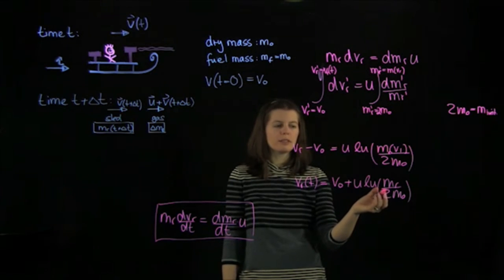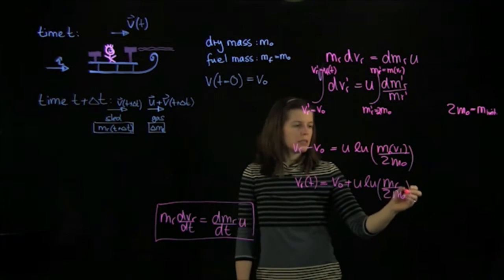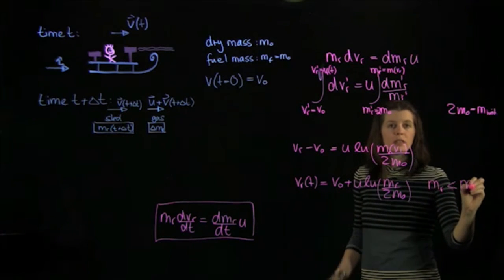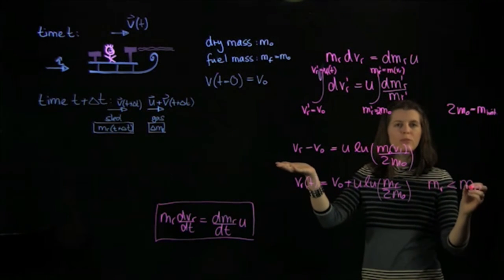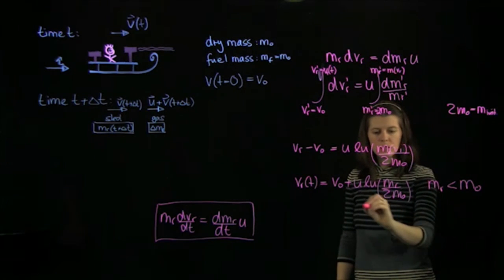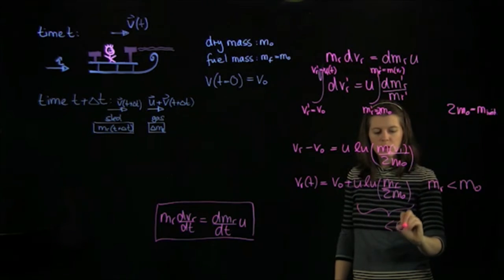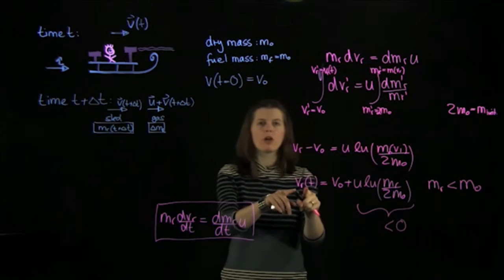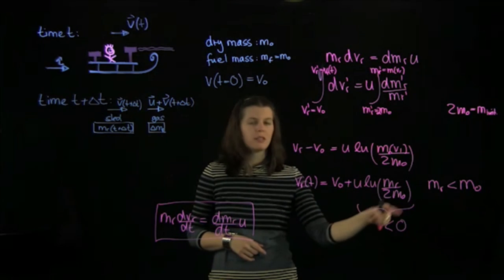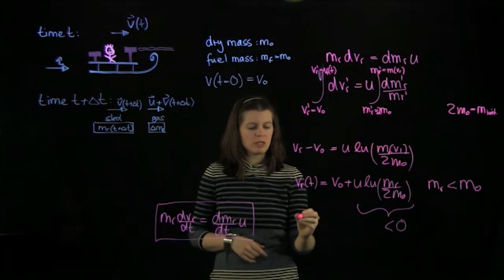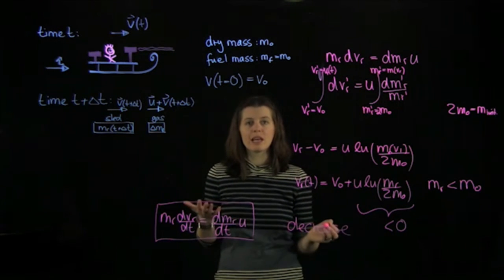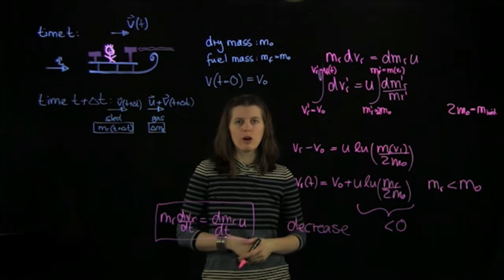So what does this equation tell us? mr, the mass of the rocket, is less later on than it was before, which means this term here is going to be less than 0, which means the velocity is our initial velocity minus something, which means we have a decrease in velocity, which means my sled will eventually come to a stop.